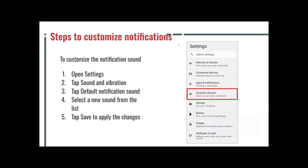Steps to customize notifications. To customize the notification sound: first, open Settings; two, tap Sound and Vibration; three, tap Default Notification Sound; next, select a new sound from the list; and lastly, tap Save to apply the changes you just made.